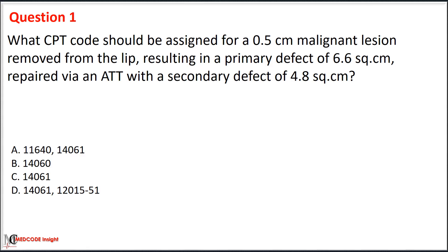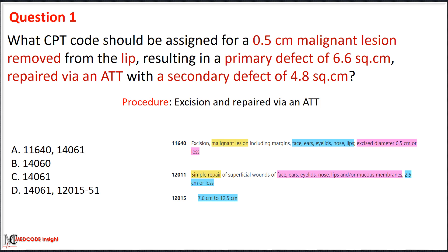Practice Question 1: What CPT codes should be assigned for a 0.5 centimeter malignant lesion removed from the lip, resulting in a primary defect of 6.6 square centimeters, repaired by an adjacent tissue transfer with a secondary defect of 4.8 square centimeters? Options: A) 11640 and 14061; B) 14060; C) 14061; D) 14061, 12015 with modifier 51. Remember that adjacent tissue transfer includes same-location excision, debridement, and repair — never code them separately. Based on this rule, we eliminate options A and D.